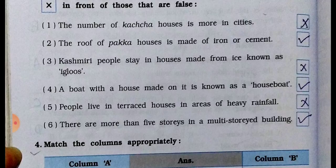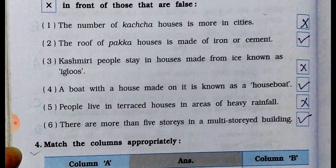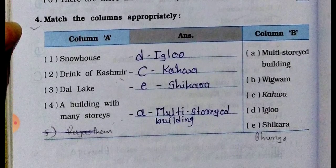Statement three: Kashmiri people stay in houses made from ice known as igloos — this is false, cross it. Statement four: a boat with a house made on it is known as a houseboat — this is true, tick it. Statement five: people live in terraced houses in areas of heavy rainfall — this is false, cross it. Statement six: there are more than five stories in a multi-storied building — this is true, tick it.